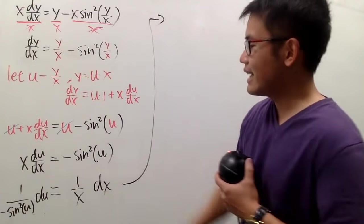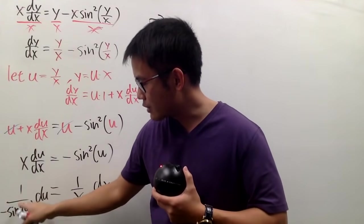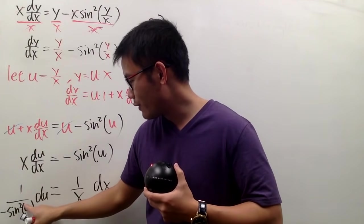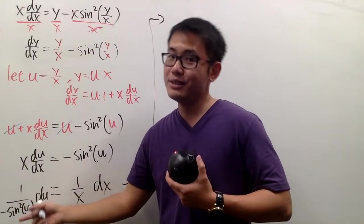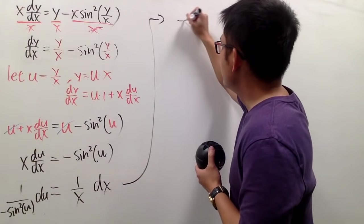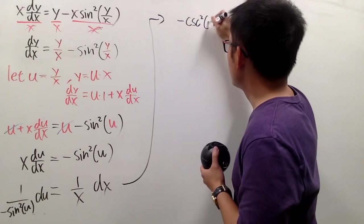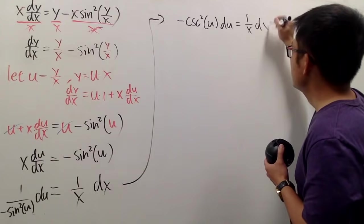But before I do that, how can we integrate 1 over negative sin squared u? Well, we know 1 over sin is cosecant, 1 over sin squared is just cosecant squared, and that's negative. So let me rewrite that first. Negative cosecant squared u du is equal to that 1 over x dx.